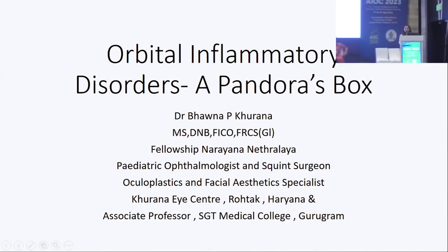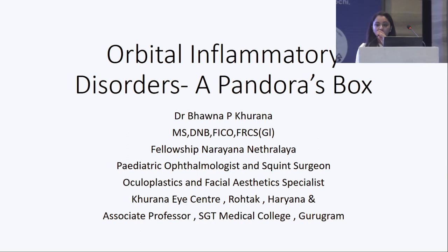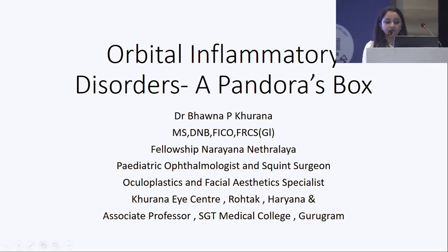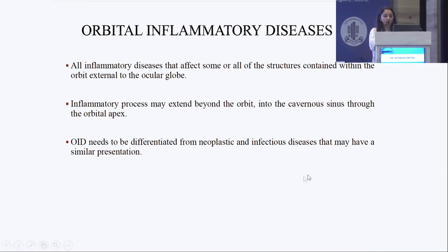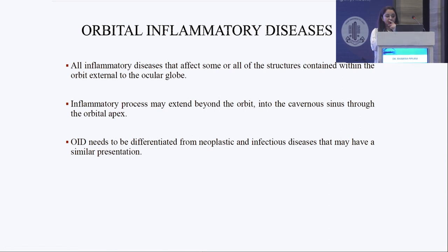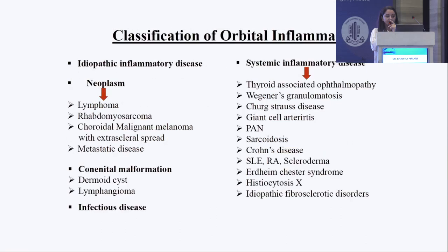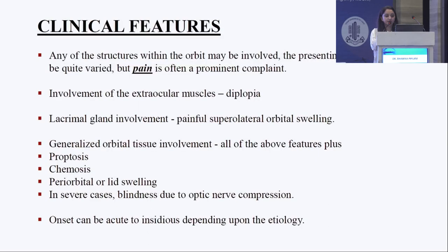Good afternoon, everybody. I'll be presenting an overview of the orbital inflammatory disorders. Orbital inflammatory disorders are all disorders that affect some or all of the structures contained within the orbit external to the ocular globe, may extend beyond the orbit into the cavernous sinus through the orbital apex, and importantly need to be differentiated from neoplastic and infectious diseases. Brief classification: idiopathic inflammatory diseases, neoplastic, congenital malformations, infectious, and systemic inflammatory diseases.